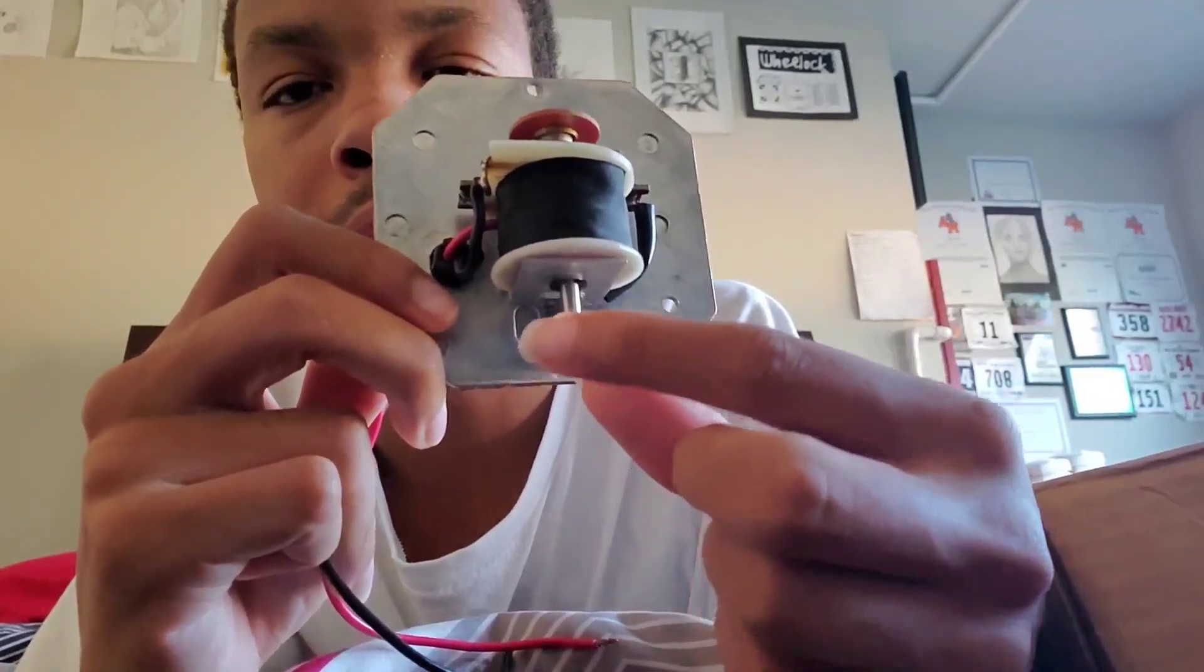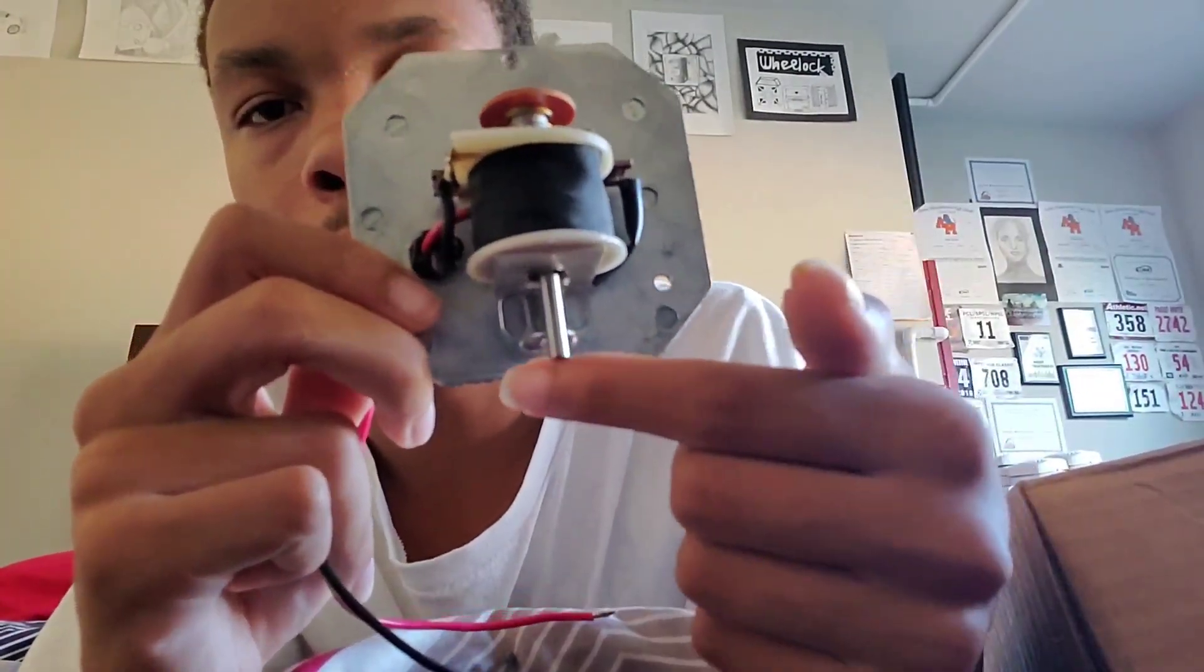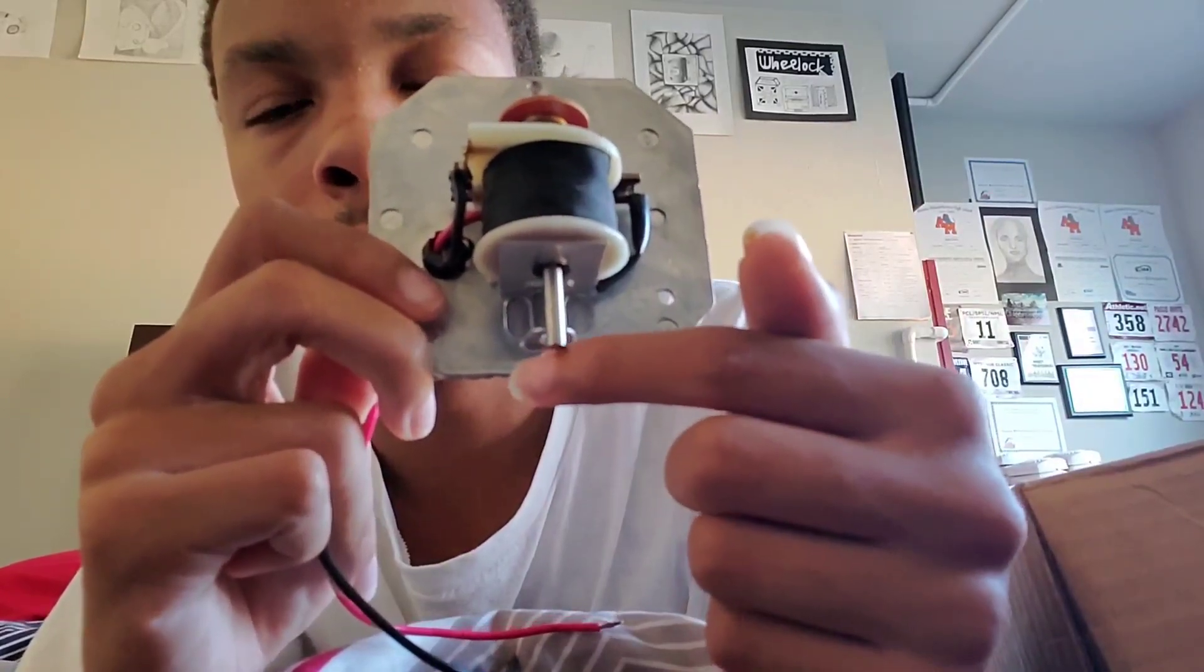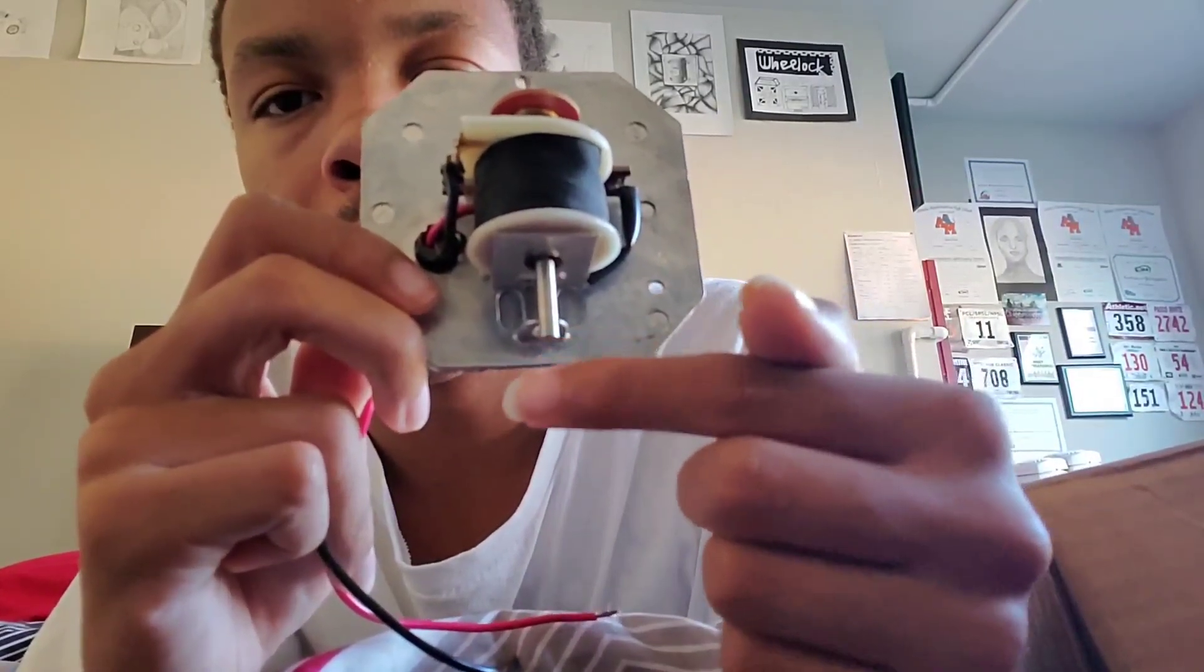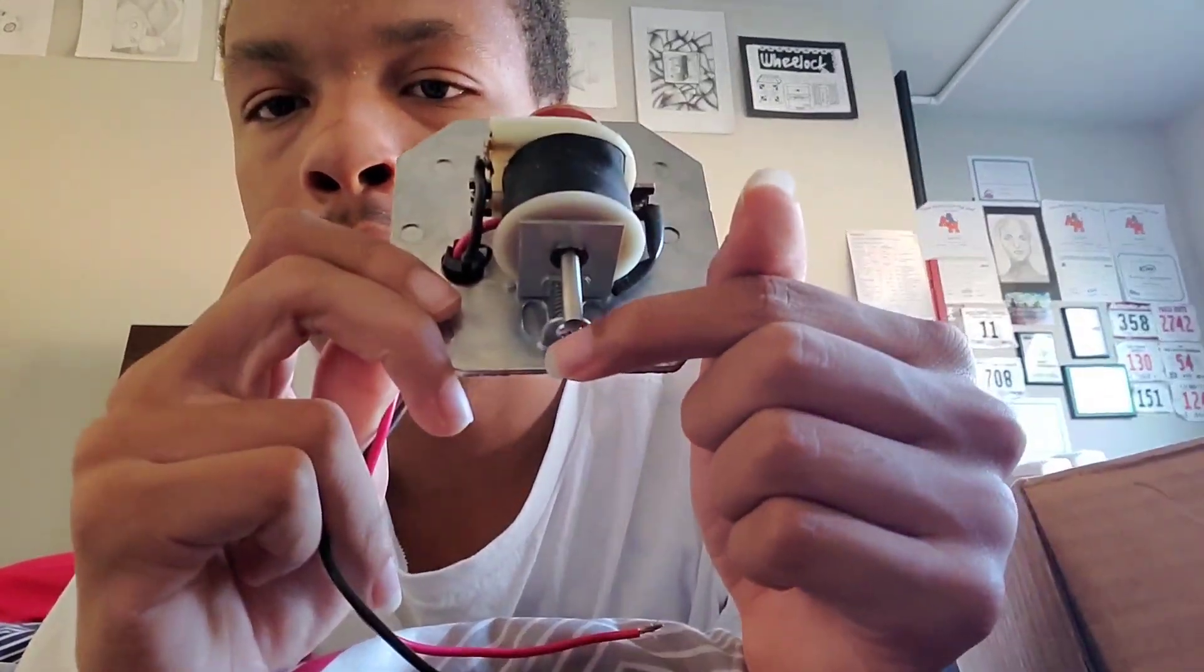If the striker is not making good enough contact with the chime bar, you'll adjust it to the right to make more contact. Or if you want to have a more aggressive strike to make it a little bit more loud, you can also turn it to the right.